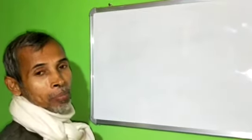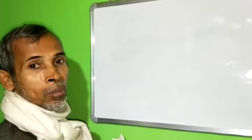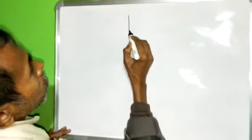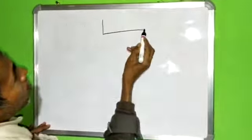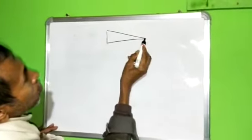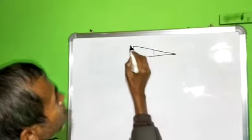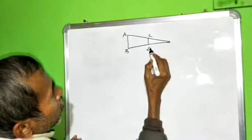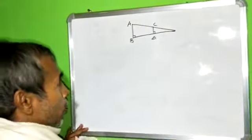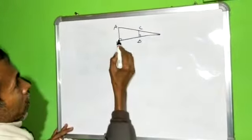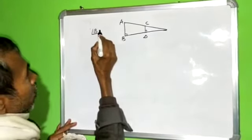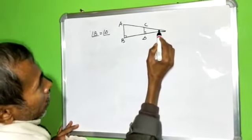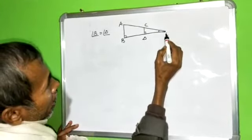Geometry Theorem class 10 for all over the world. ABCD, angle B equal to angle D, angle B equal to angle D and this angle E.